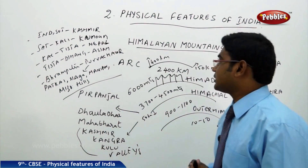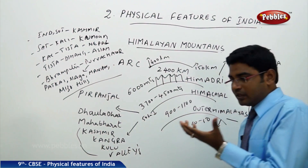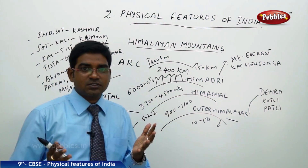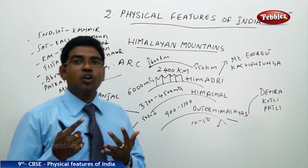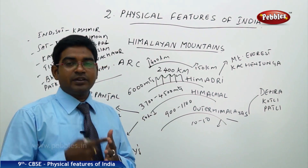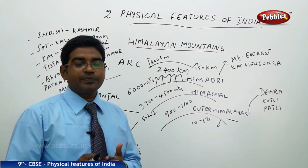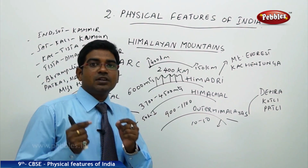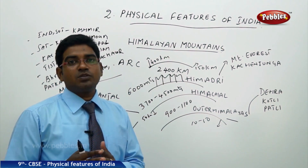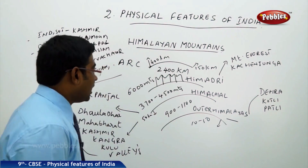Now we shall discuss how the Himalayan Mountains are formed. We all know that India has six major physical divisions: the Himalayas, the Northern Plains, the Peninsular Plateau, the Great Indian Desert, the Coastal Plains, and finally the Islands. These together are the six major Indian physical divisions.